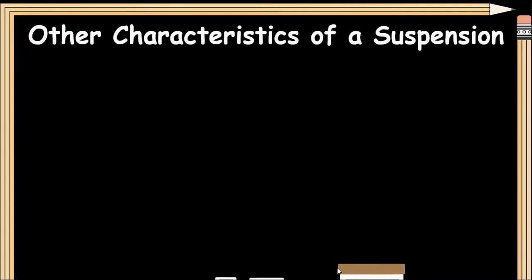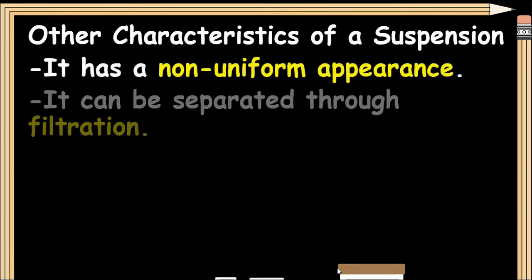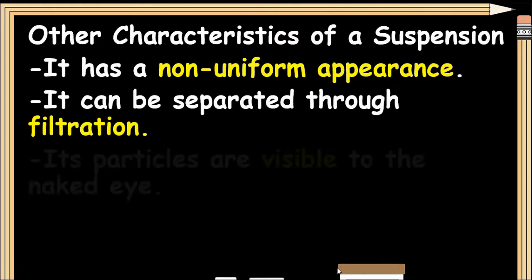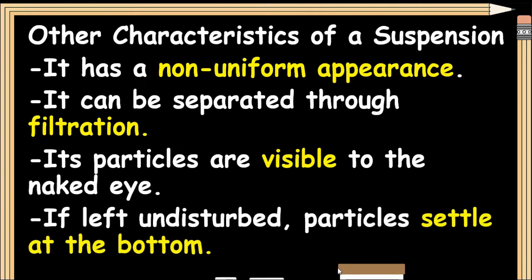Other characteristics of a suspension: It has a non-uniform appearance. It can be separated through filtration. Its particles are visible to the naked eye. If left undisturbed, particles settle at the bottom.